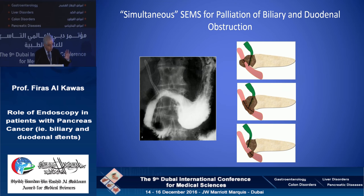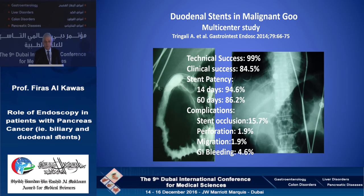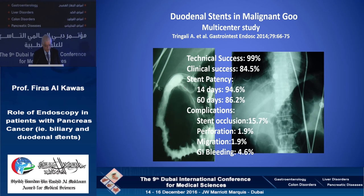Sometimes dual stenting is needed. In such cases, the biliary stent should be placed first, then the duodenal stent. When the ampulla is engulfed, we may not be able to find the biliary opening, so we may combine EUS-guided drainage or percutaneous drainage with duodenal stent placement. Technical success is high, and the majority of patients can resume oral intake. However, these stents can migrate and will occlude if patients live longer, which limits their use in patients with longer expected survival.